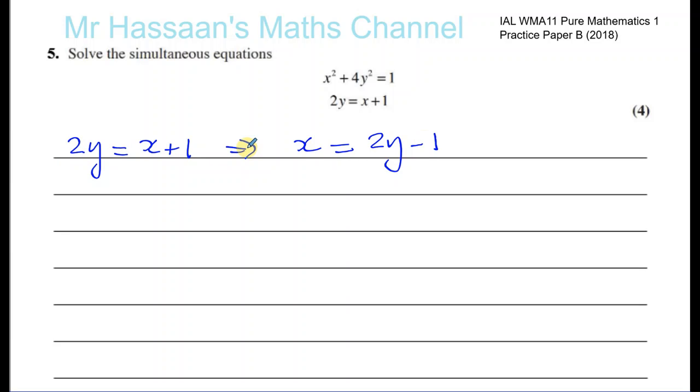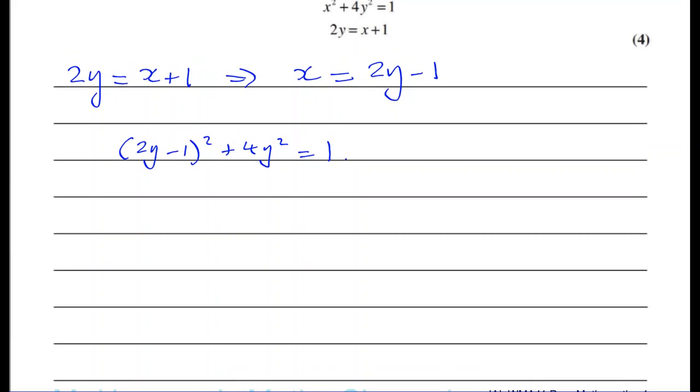This is 2y minus 1. Subtract 1 from both sides. So I can now substitute that instead of the x in the first equation. So I can substitute 2y minus 1 instead of the x here. So if I look at equation 1, instead of x squared, I'll write 2y minus 1 squared. Then I'm going to have plus 4y squared equals 1. Now I have an equation with just y's in it. So I can now proceed to just solve this equation.